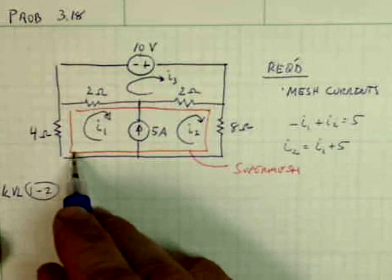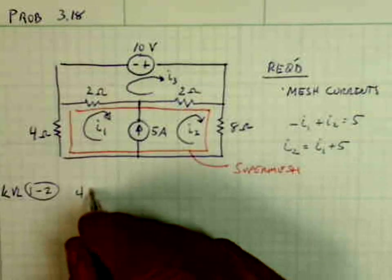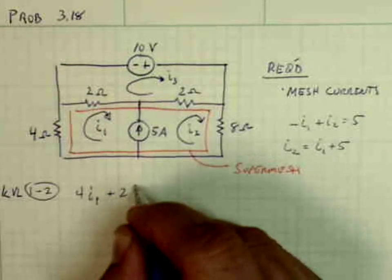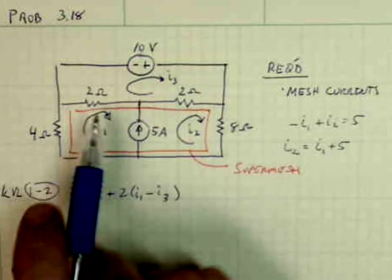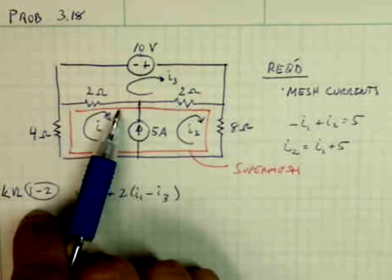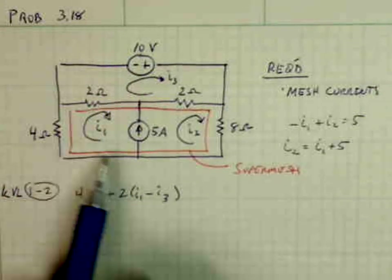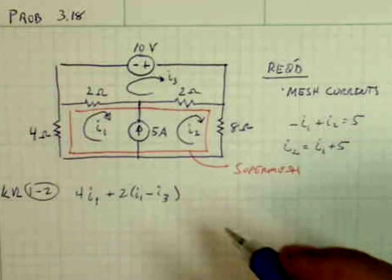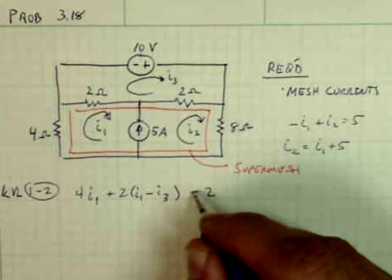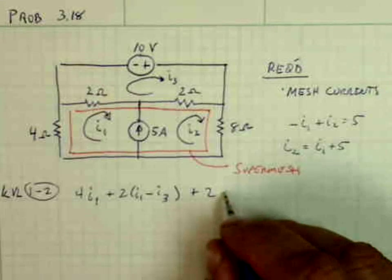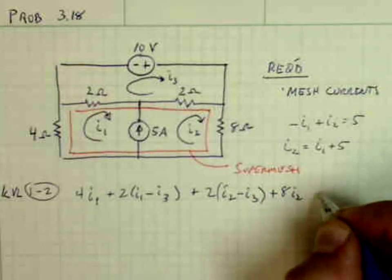So I'll start in the lower left corner and I have 4I1 plus 2 times (I1 minus I3), which is the voltage across this 2 ohm resistor. I1 moving to the right, I3 moving to the left. You add them up, it's I1 minus I3 to the right. Continue along the super mesh plus 2 times (I2 minus I3) plus 8I2 is equal to 0.